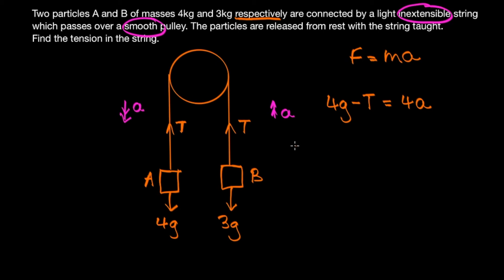So now if we resolve the forces around B, we have a tension pulling B up towards the pulley and a weight of three times gravitational constant opposing the tension. So our net force is T minus three g, and that's equal to ma. And in this case the mass is three kilograms, and again the acceleration we don't know yet.